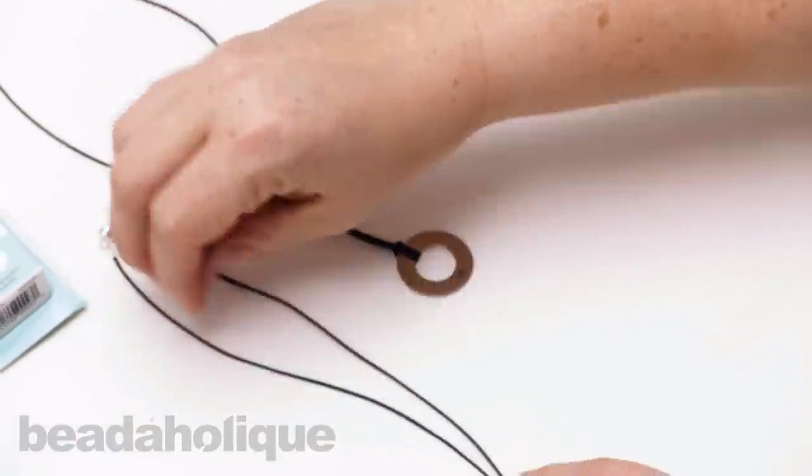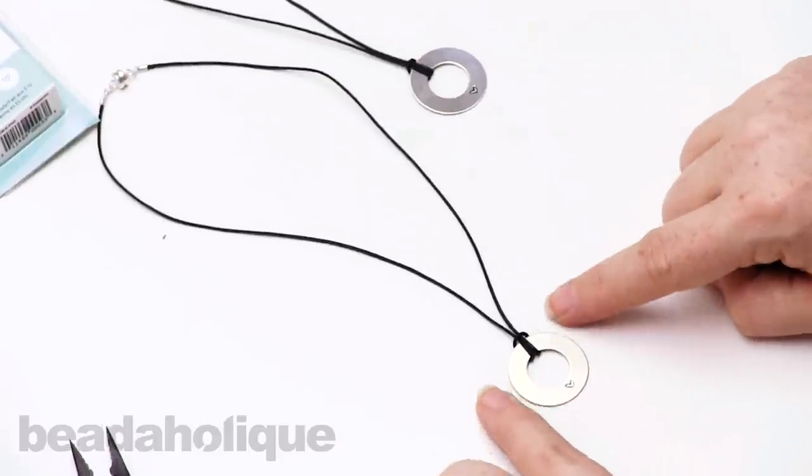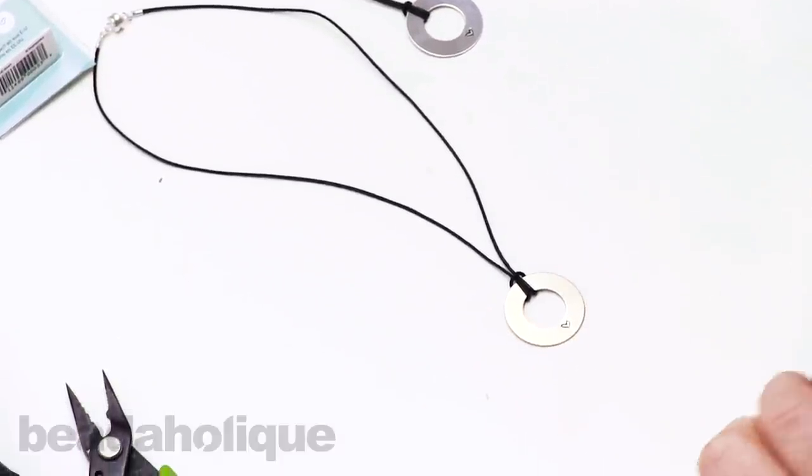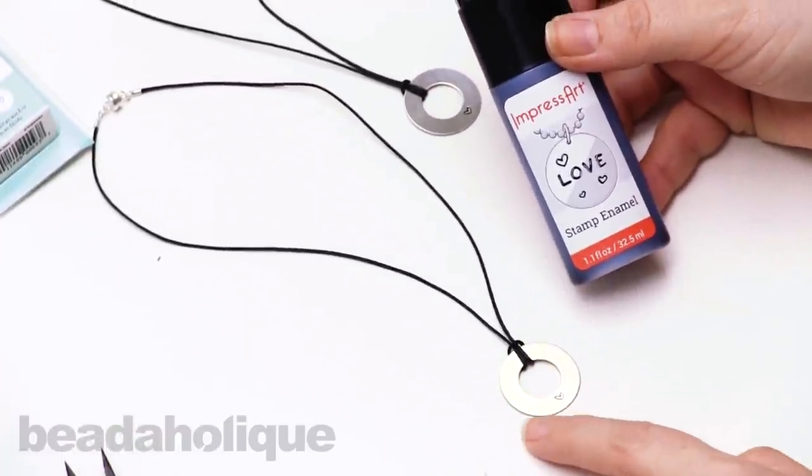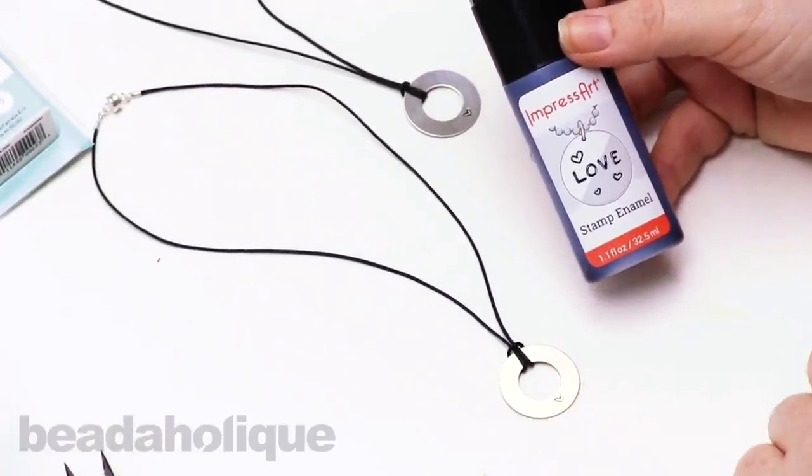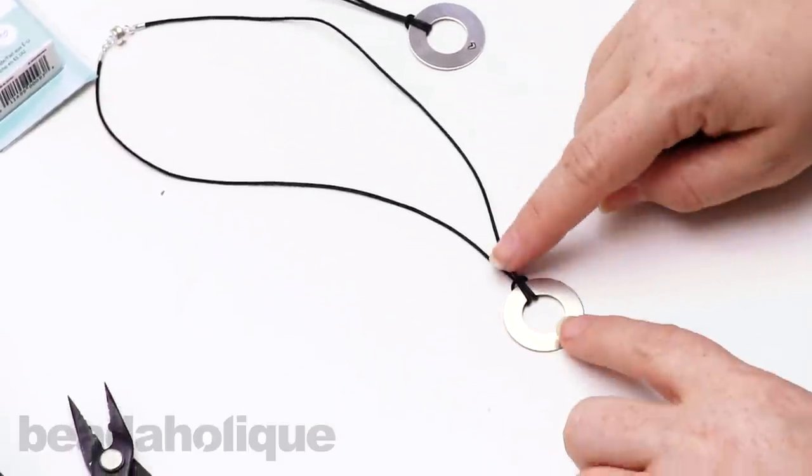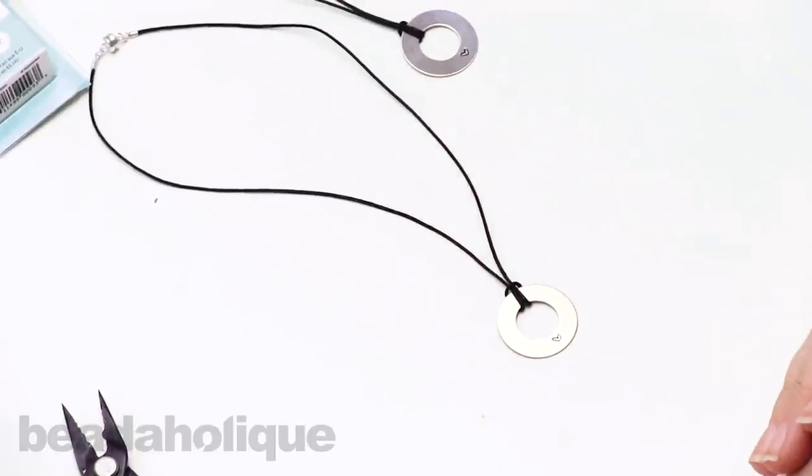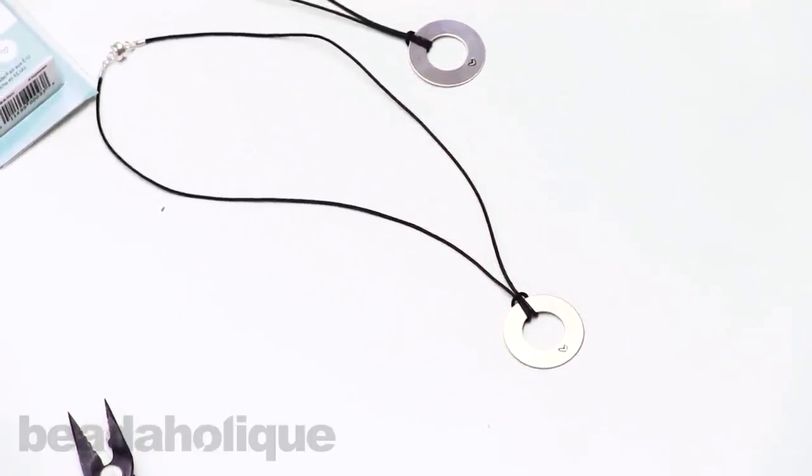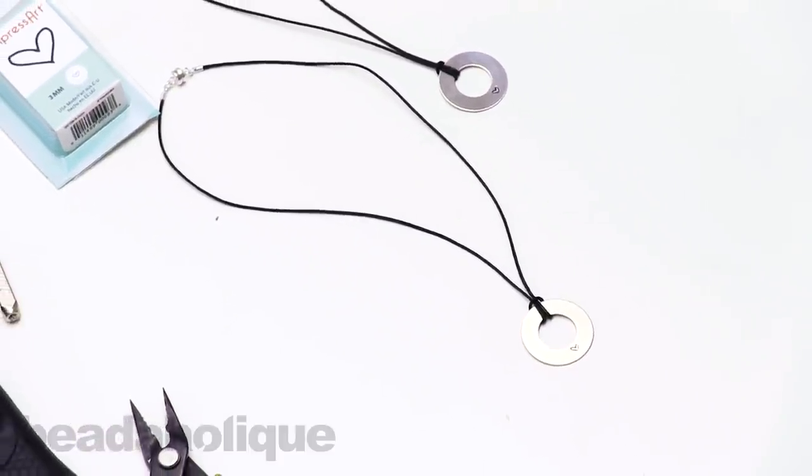That's how quick and simple and easy this little project is. If you want to get really fun and do some more stampings, I definitely encourage that. Instead of the ImpressArt stamp enamel, you can also use Vintage patinas if you want to add a little bit of color there. So there's a lot of fun things that you can do with this technique. You can add two strands and create a little bracelet that's really nice and fun. I hope you enjoyed this video. You can get all of these supplies and find more videos on www.beadaholique.com.